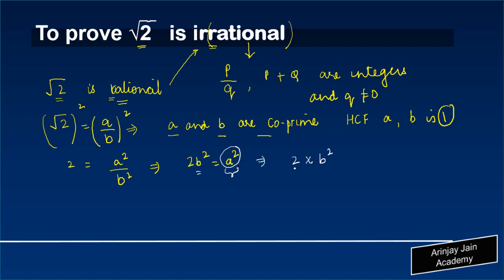If the value of A square is 2 multiplied by B square, what that means is that A square is an even number. Because if a number is multiplied by 2, then it has to be an even number. So the value of A square could be equal to 2M, where M could be any number. Because A square is equal to 2 times multiplied by some number, A square is an even number. An even number can be obtained only by multiplying 2 by some other number, and that other number I am assuming as M.